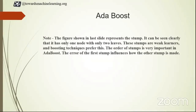One important thing to focus on is the order of these stumps. The order is very important in AdaBoost because the error of the first stump is passed to the second stump, and the error of the second stump is passed to the third stump. The error of the first stump influences how the next stump is made. That's why the order is very important — you can't shuffle among the stumps; you have to keep a particular order.